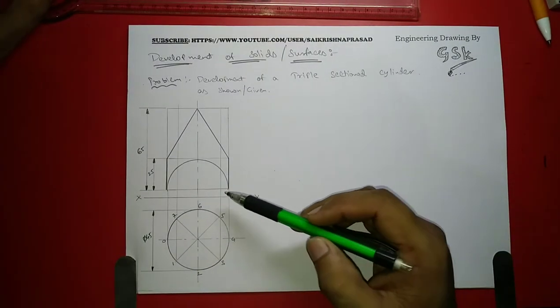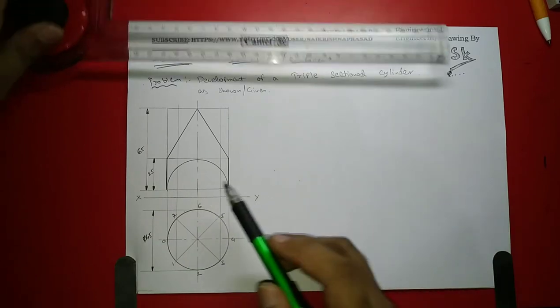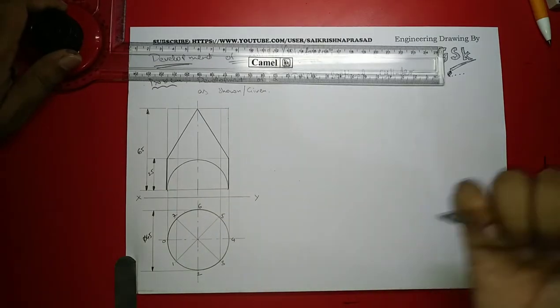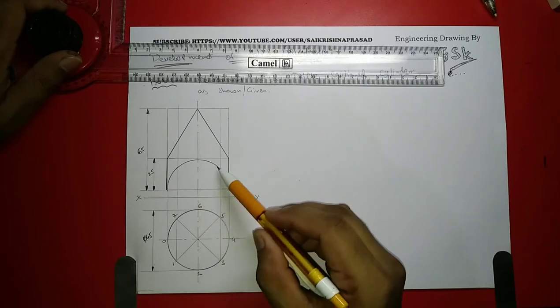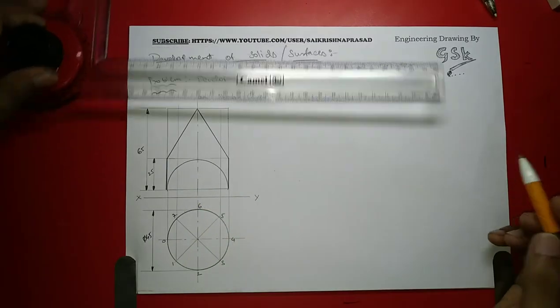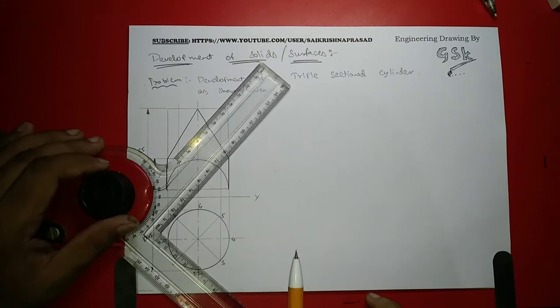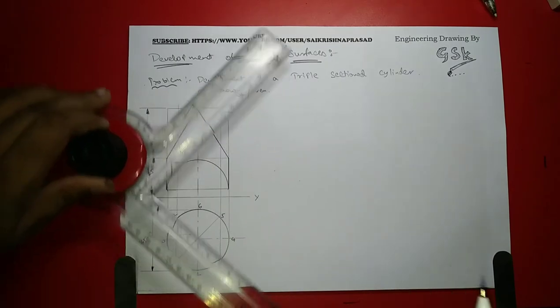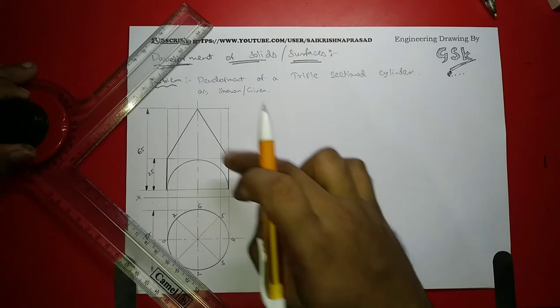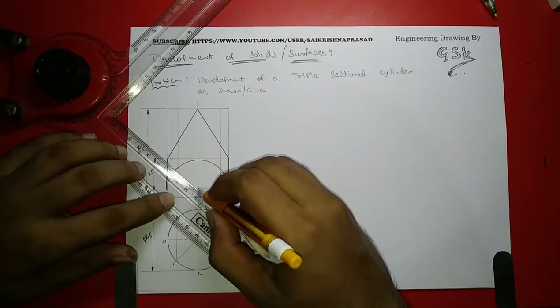I have drawn it over here. For this I have to develop or generate the generators by dividing the circle into equal number of parts. It is not done in the problem, now I am doing this.